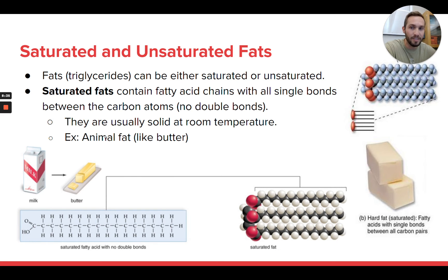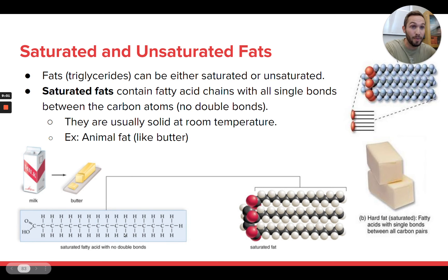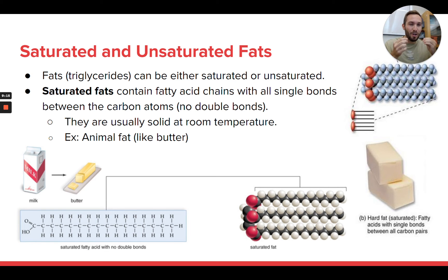Saturated fats are usually produced in animals — animals produce a lot of saturated fats. Even humans, the fat in your body is mostly saturated fat. So anytime you have fat that came from an animal, it's usually going to contain a lot of saturated fat. Butter, for example, which is made using milk, is almost pure saturated fat. The fat on a juicy piece of steak — that's saturated fat. And saturated fat is usually a solid at room temperature.